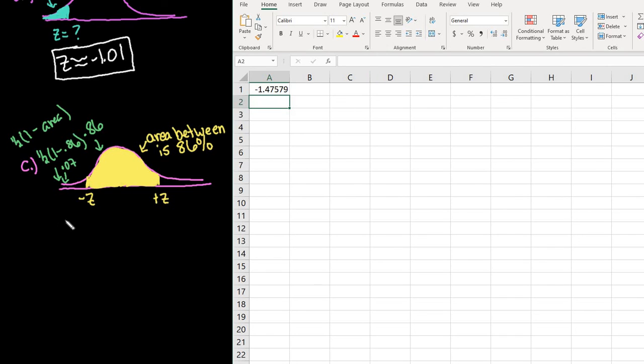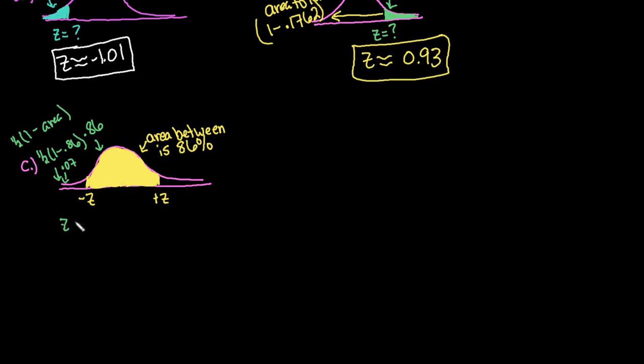And I would get negative 1.46. Sorry, negative 1.476. I'm going to go ahead and round that up to negative 1.48. And then the positive z-score is just going to be the opposite sign. Okay, so we would just report it as negative 1.48 and positive 1.48.